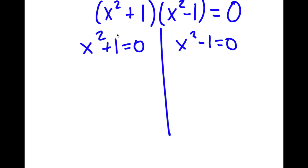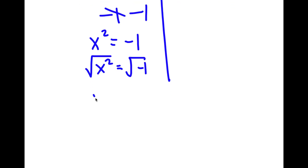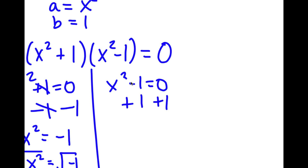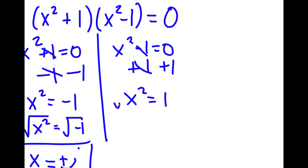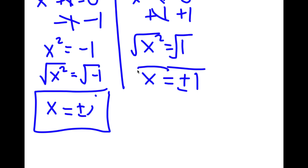For x squared plus 1 equals 0, I'm going to subtract 1 on both sides, so I get x squared is equal to negative 1. Taking the square root on both sides, the square root of x squared is x, and the square root of negative 1 is i. So I have x equals plus or minus i. For x squared minus 1 equals 0, I'm going to add 1 on both sides, so x squared equals 1. Taking the square root, I get x equals plus or minus 1. So these are my four solutions to this problem.